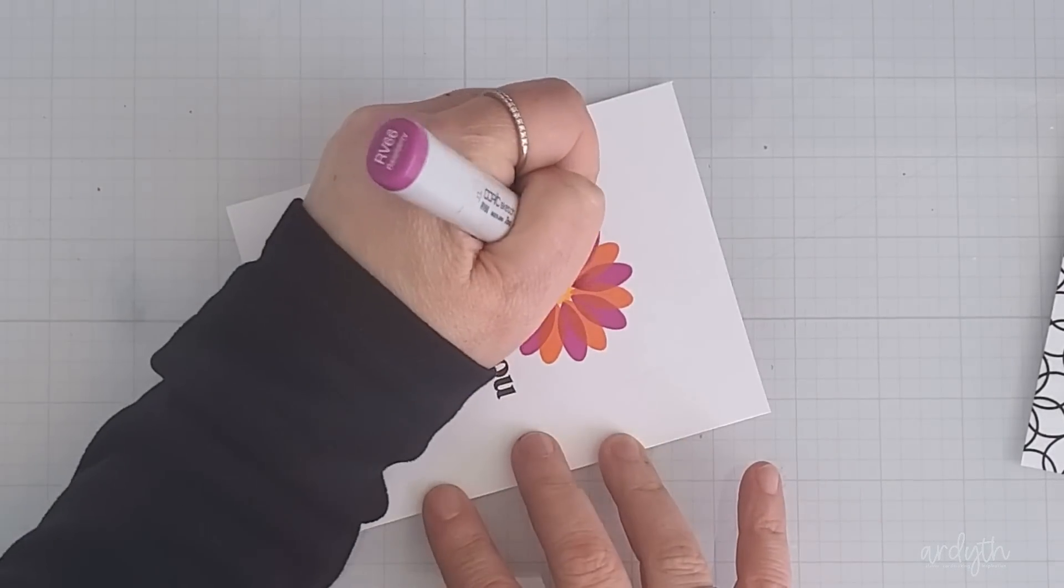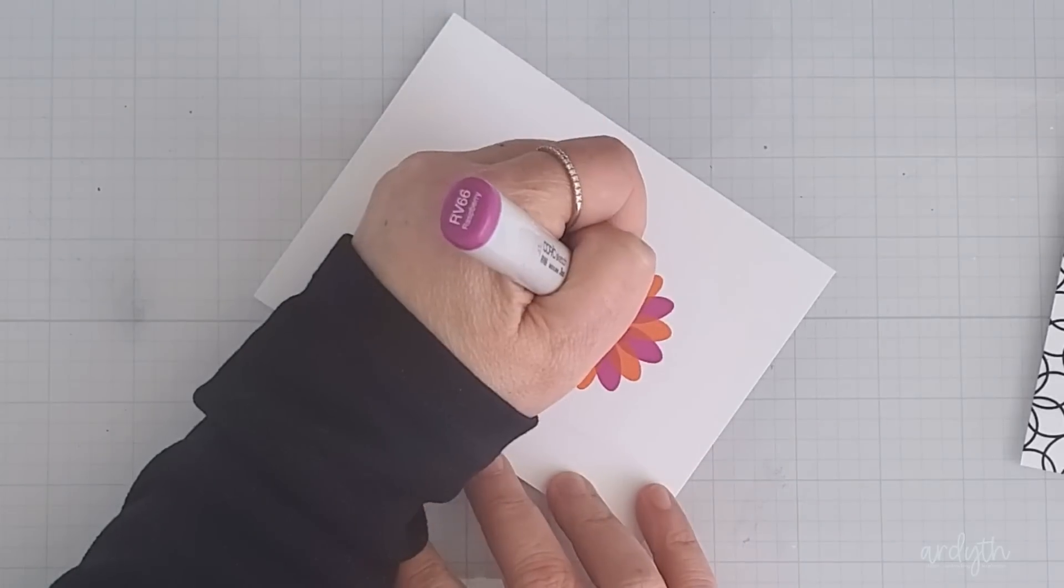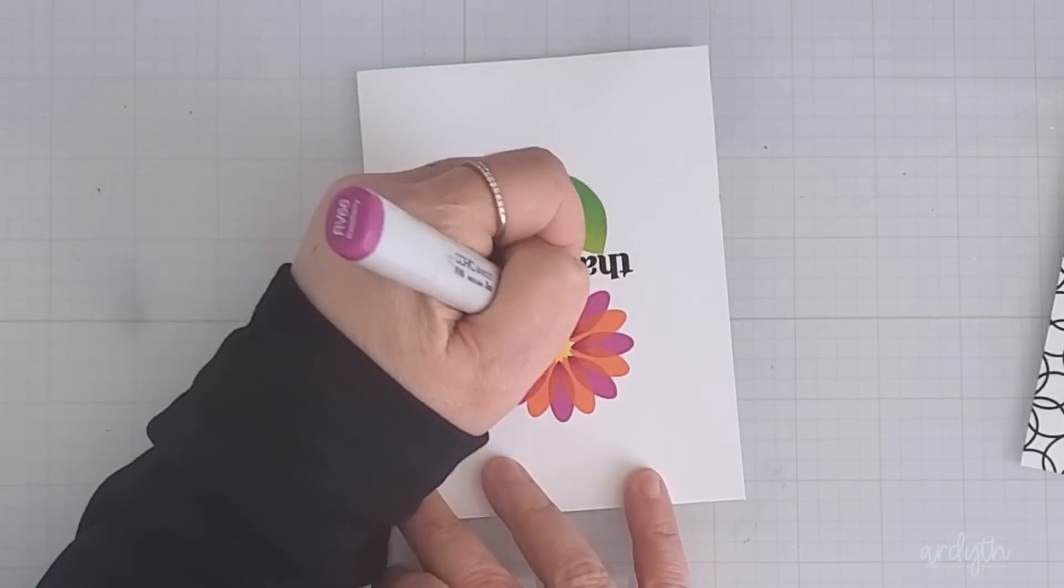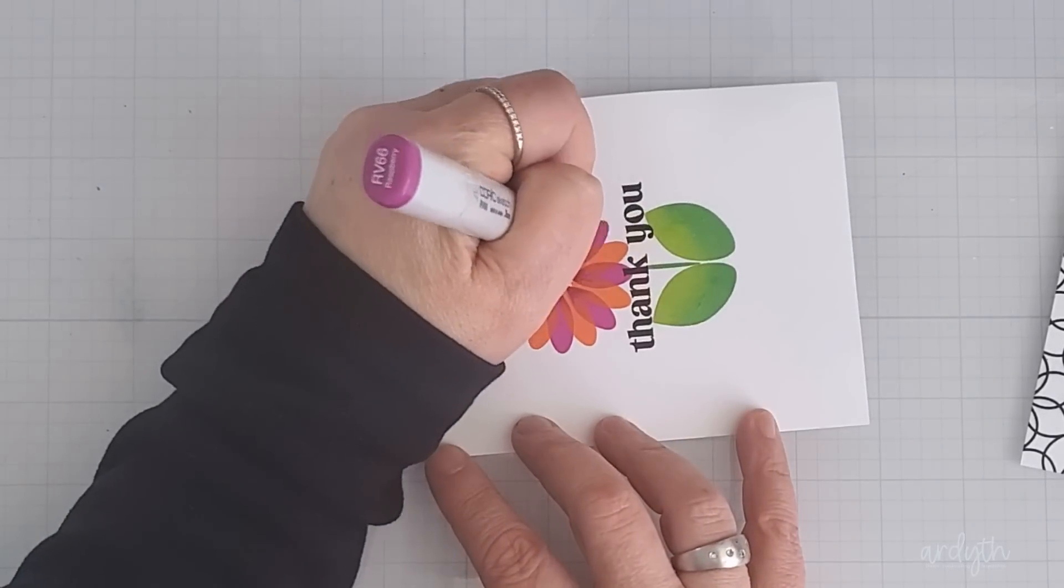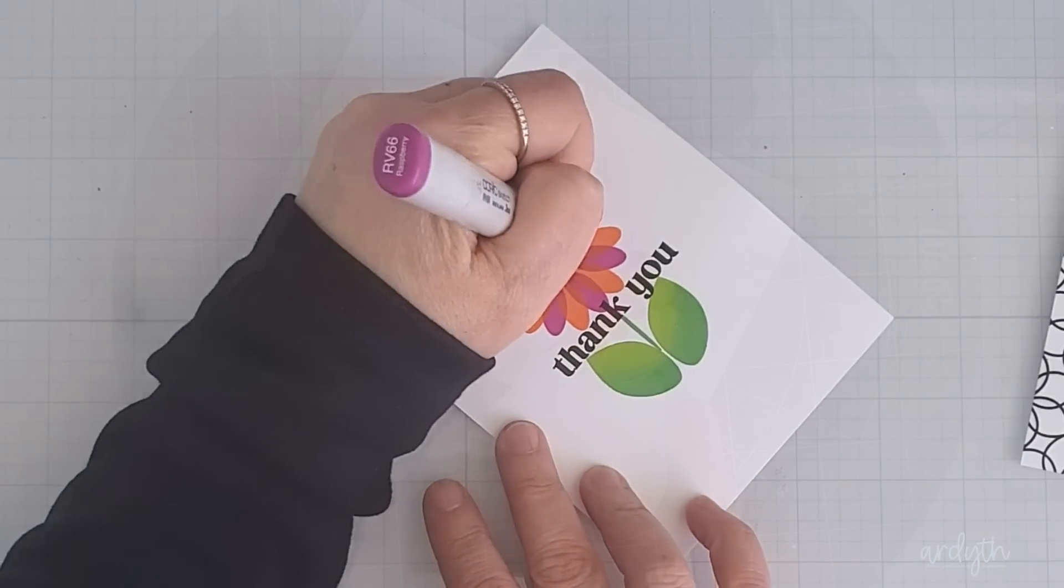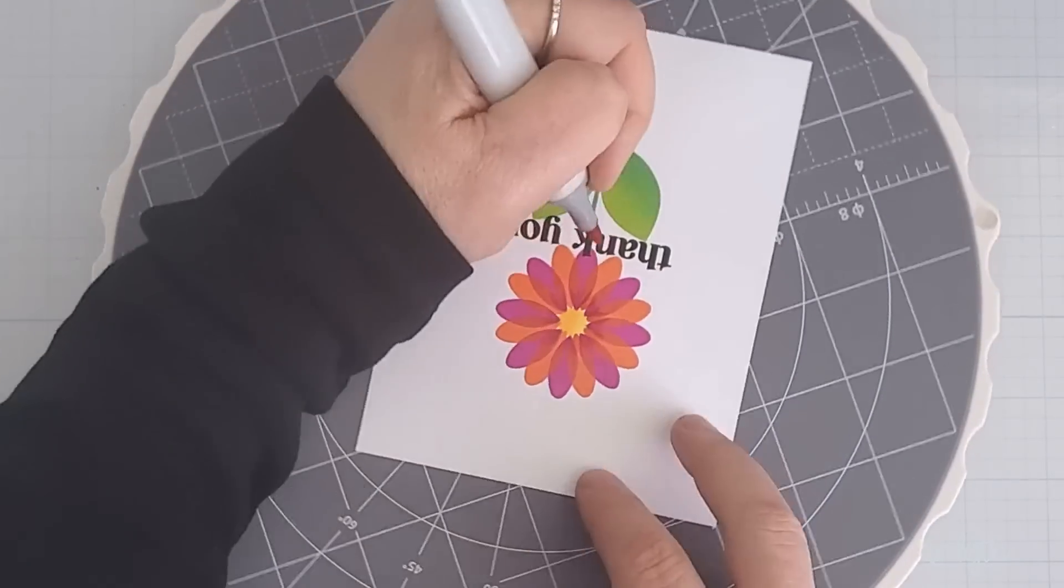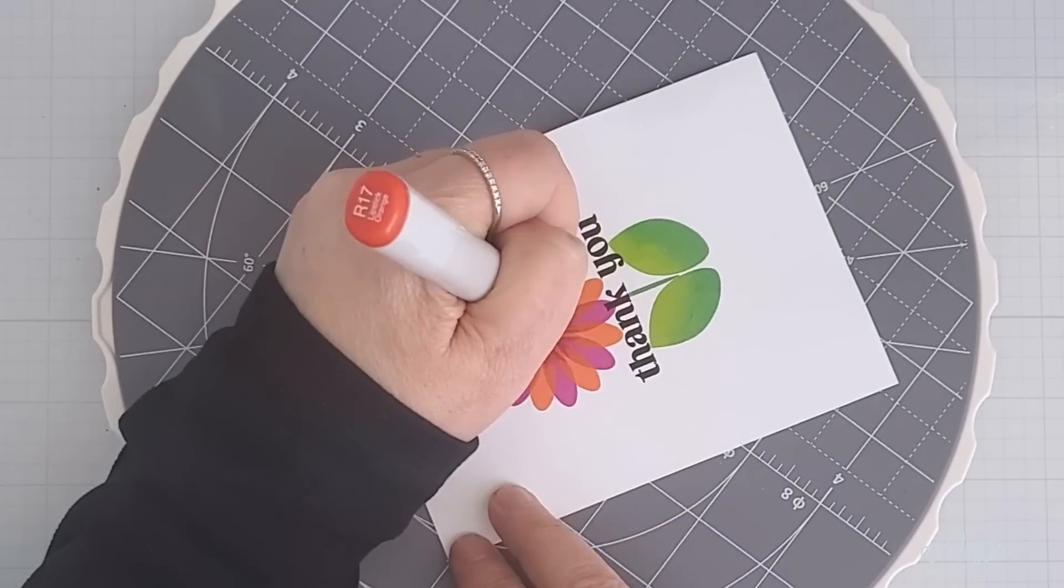I added a sentiment from the set stamped in black and then I grabbed a Copic marker to add some dimension to the flowers by shading them. This is another way to get great dimension. Choose a color that's slightly darker than your ink color. And here I'm just flicking little strokes of color from the inner tip of the petal out. This shading gives some depth and interest and I went back and finished the orange petals as well.